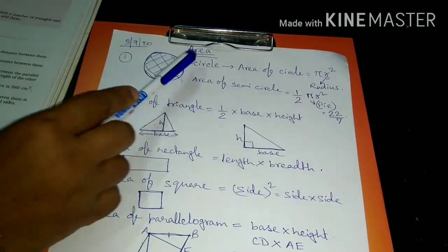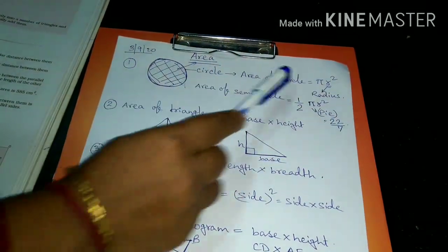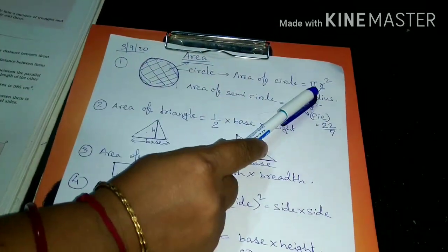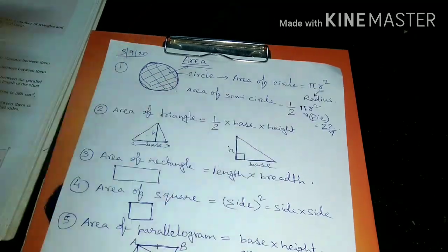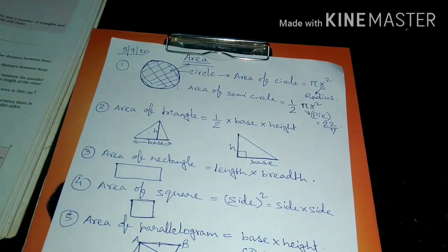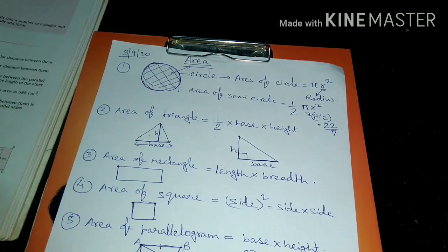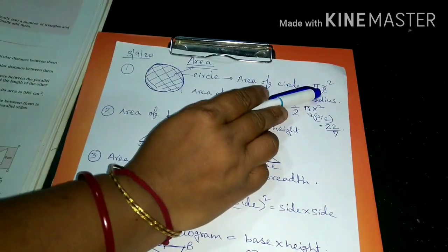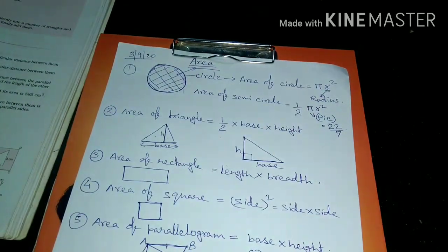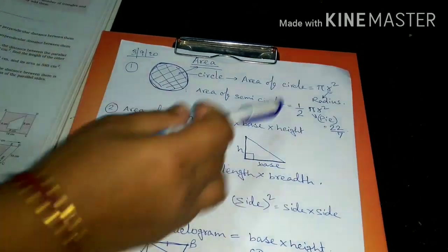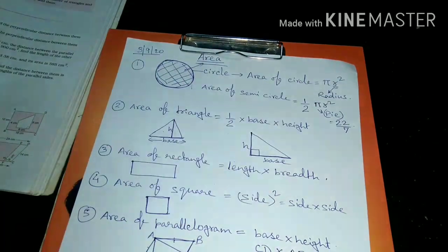Now what is area of circle? Area of circle is π r². This is the sign of pi, called pi. And r means the radius. So area of circle is π r².